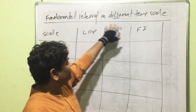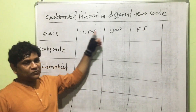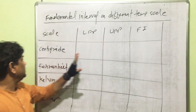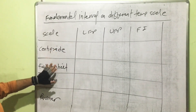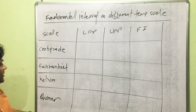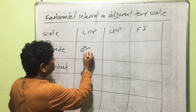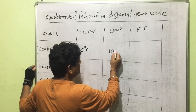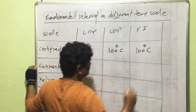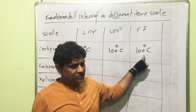Now let's look at the fundamental interval on different temperature scales. For the centigrade scale: lower fixed point is 0°C, upper fixed point is 100°C, fundamental interval is 100°C, and the total number of divisions is also 100.